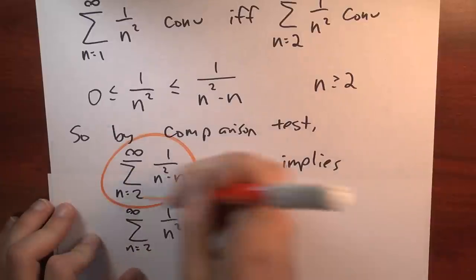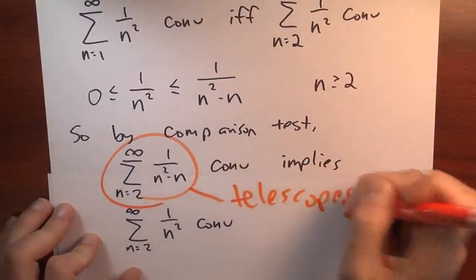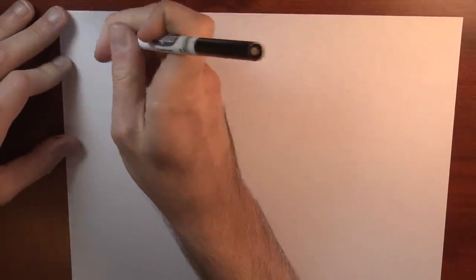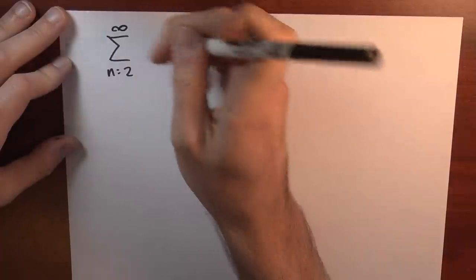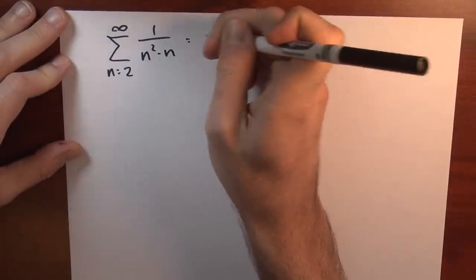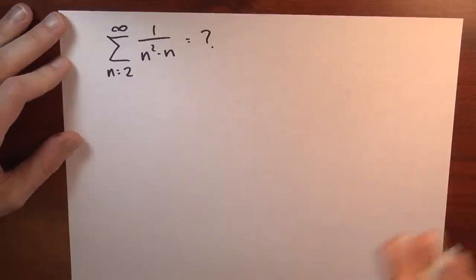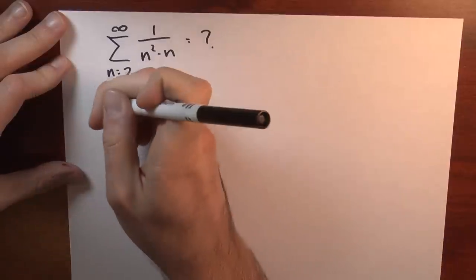It's going to turn out that this series telescopes. The series I'm interested in analyzing is the sum n goes from 2 to infinity of 1 over n squared minus n. I'd like to evaluate that series. The trick is to notice the following.